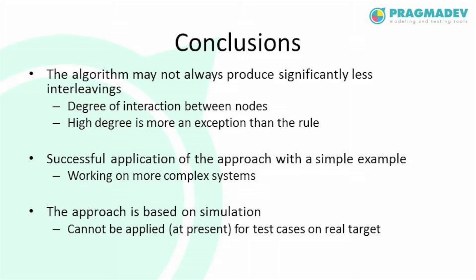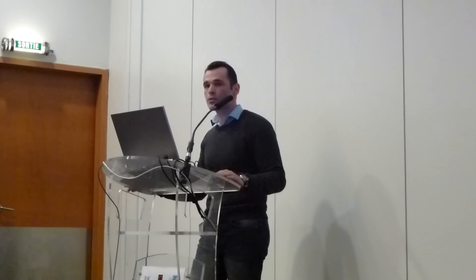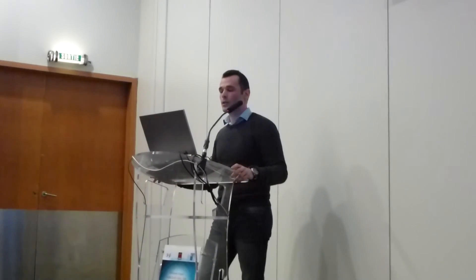In conclusion, the algorithm may not always produce significantly fewer interleavings — that depends on the degree of interaction between nodes. If there is a high degree of interaction, there will be more interleavings. However, we believe this is more of an exception than the rule. For example, in scenarios with thousands or millions of battery-powered nodes, energy consumption is crucial, so they tend to minimize communication between nodes because of such constraints.